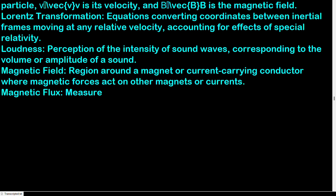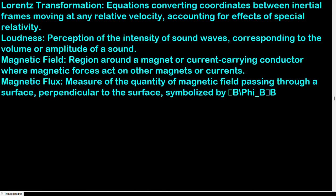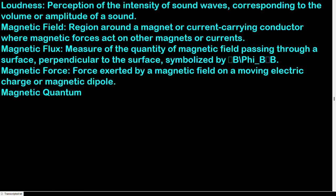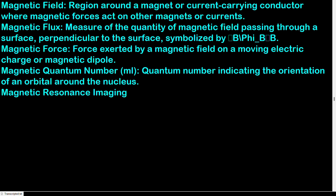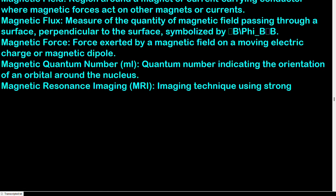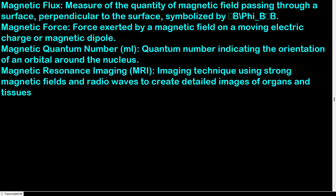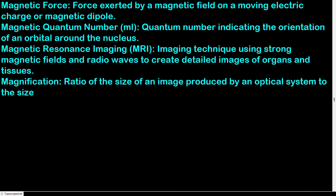Magnetic flux: measure of the quantity of magnetic field passing through a surface perpendicular to the surface; symbolized by Φ_B. Magnetic force: force exerted by a magnetic field on a moving electric charge or magnetic dipole. Magnetic quantum number (ml): quantum number indicating the orientation of an orbital around the nucleus. Magnetic resonance imaging (MRI): imaging technique using strong magnetic fields and radio waves to create detailed images of organs and tissues. Magnification: ratio of the size of an image produced by an optical system to the size of the object.